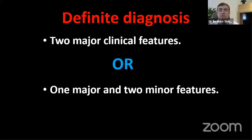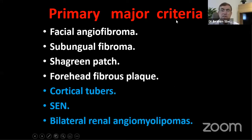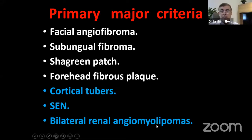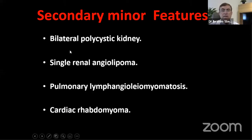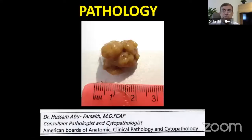Diagnosis of tuberous sclerosis requires two major features or one major and two minor features. Major criteria include facial angiofibroma, subungual fibroma, shagreen patch, forehead fibrous plaque, cortical tubers, subependymal nodules, and bilateral renal angiomyolipomas. Minor features include cystic kidney, single renal angiomyolipoma, pulmonary lymphangioleiomyomatosis, or cardiac rhabdomyoma.